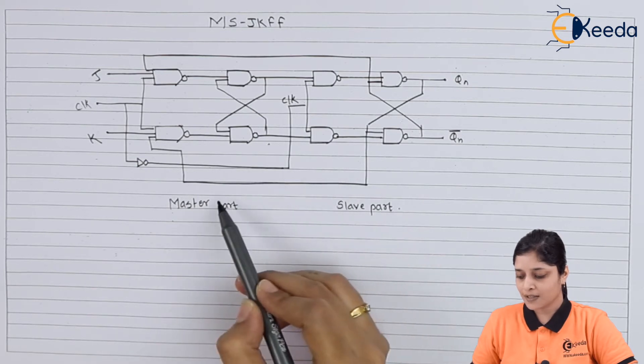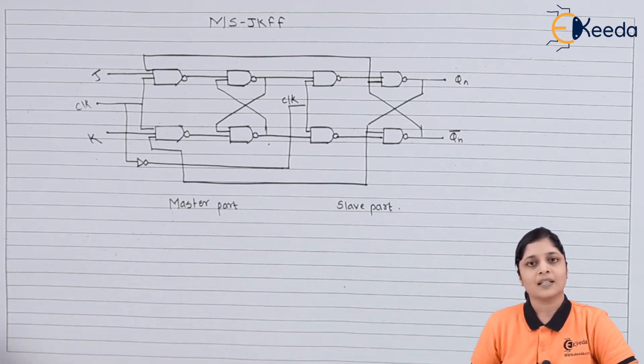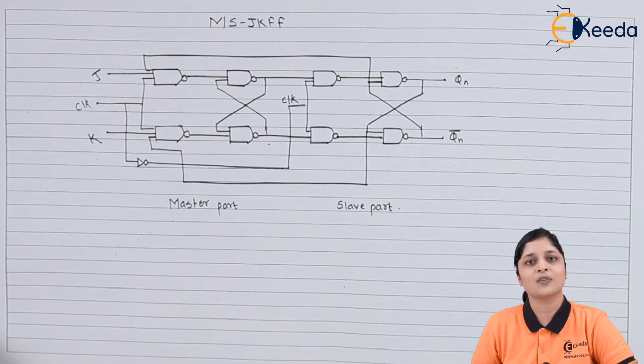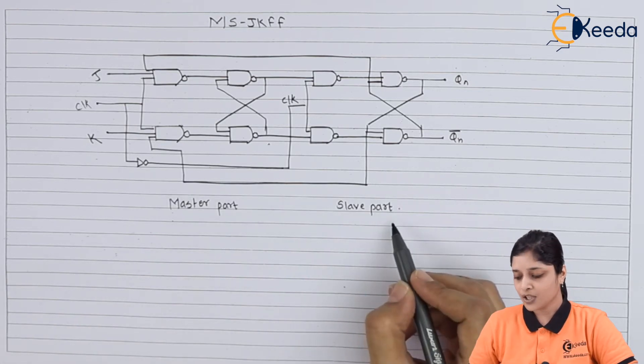If you make the connections like master-slave JK flip-flop, the race around condition will be stopped. This overcomes the disadvantage of the JK flip-flop. That's why we have used the master-slave JK flip-flop.